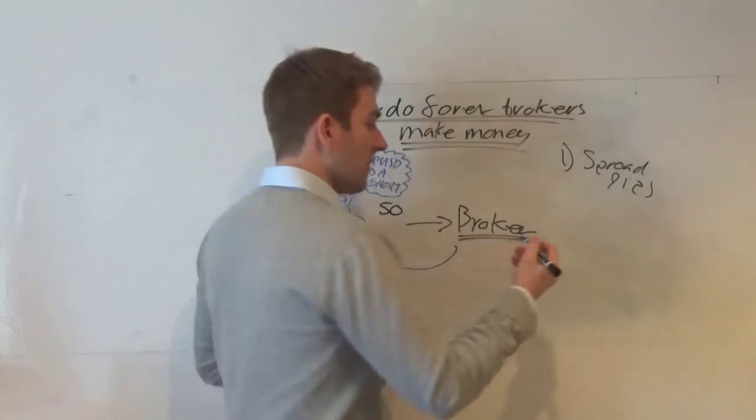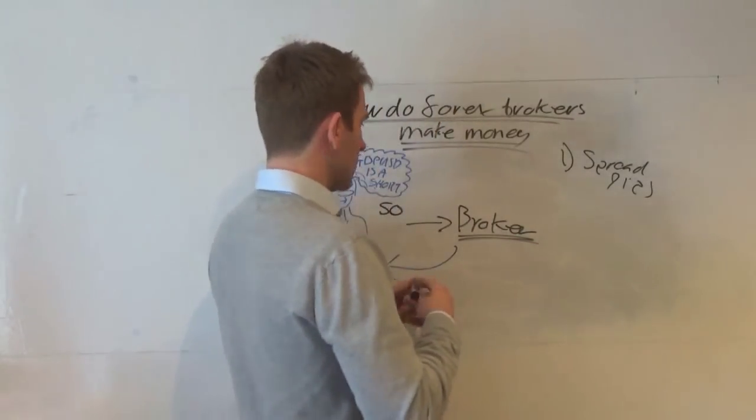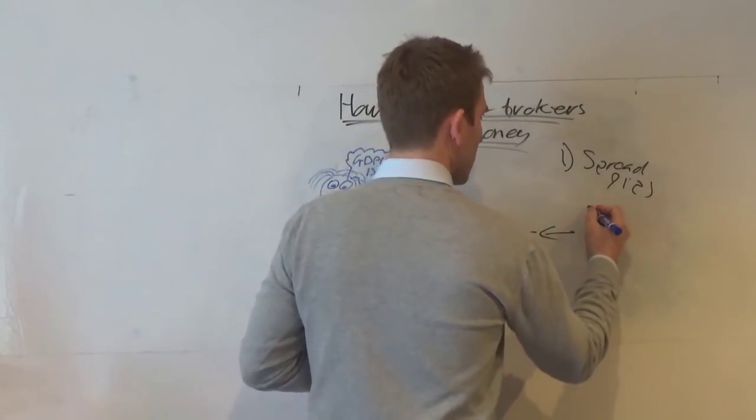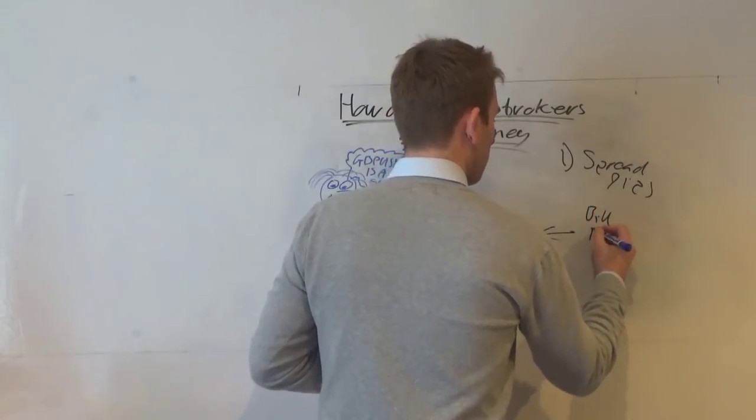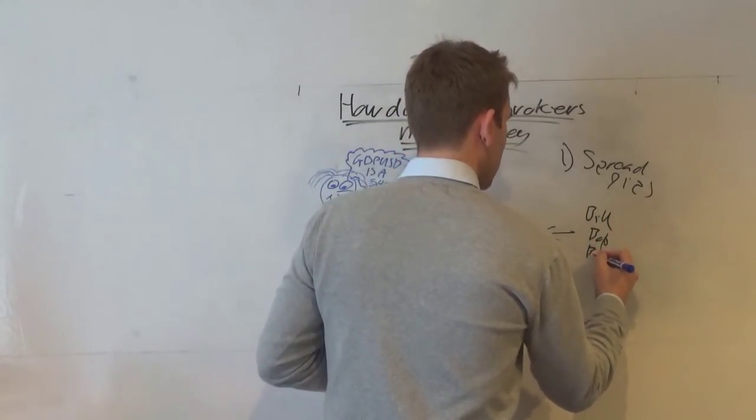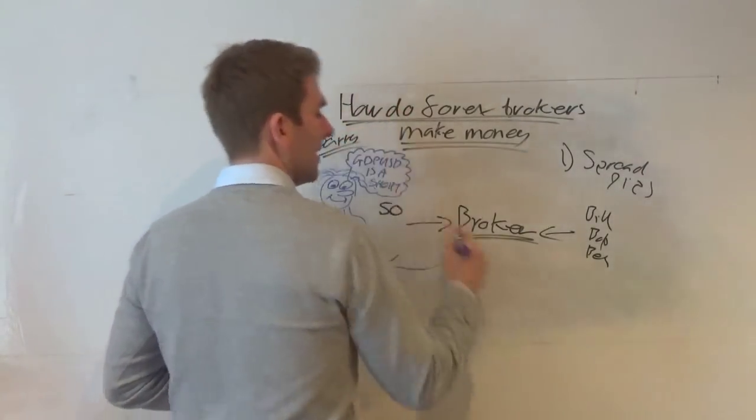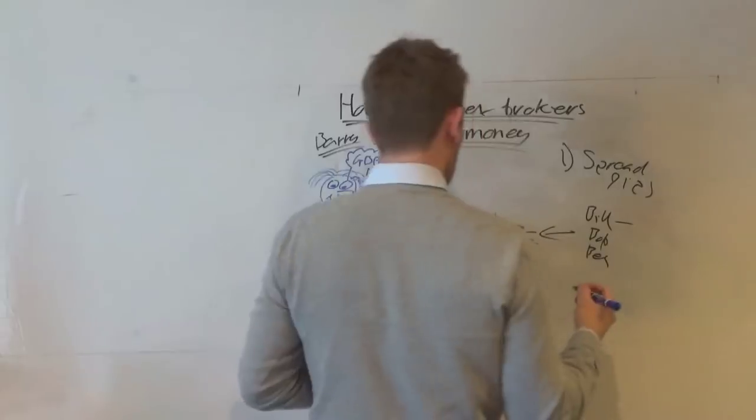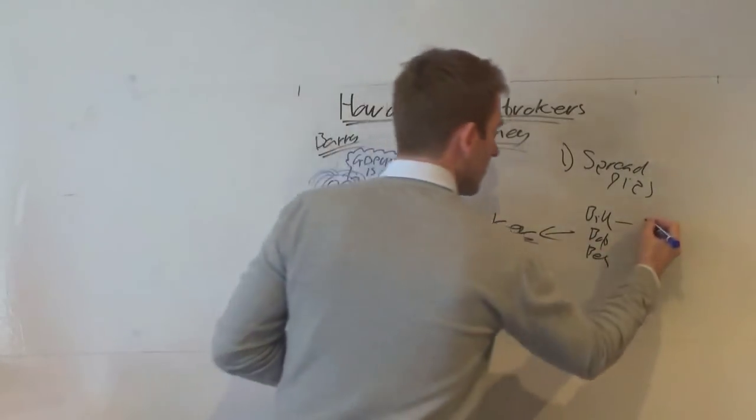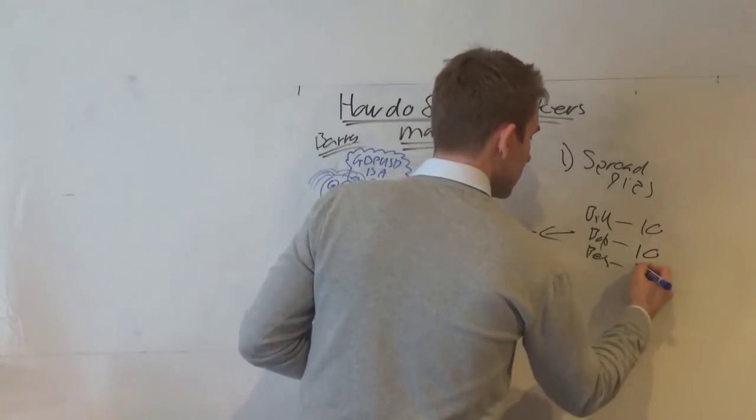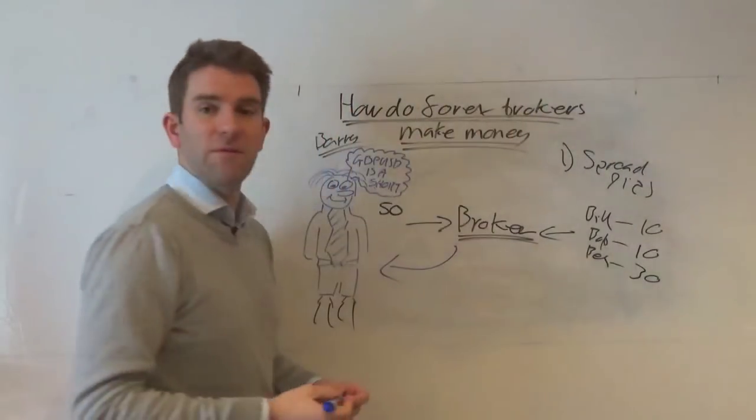So we'll have on the other side of the coin, let's say we've got now three other traders. We've got Bill, we've got Bob, and we've got Ben. And why don't we call this guy Barry. So Bill suddenly says, you know what, I think cable is a buy. I'm going to buy 10 lots. Bob does the same. And Ben says, I'm going to buy 30. 30, 40, 50.